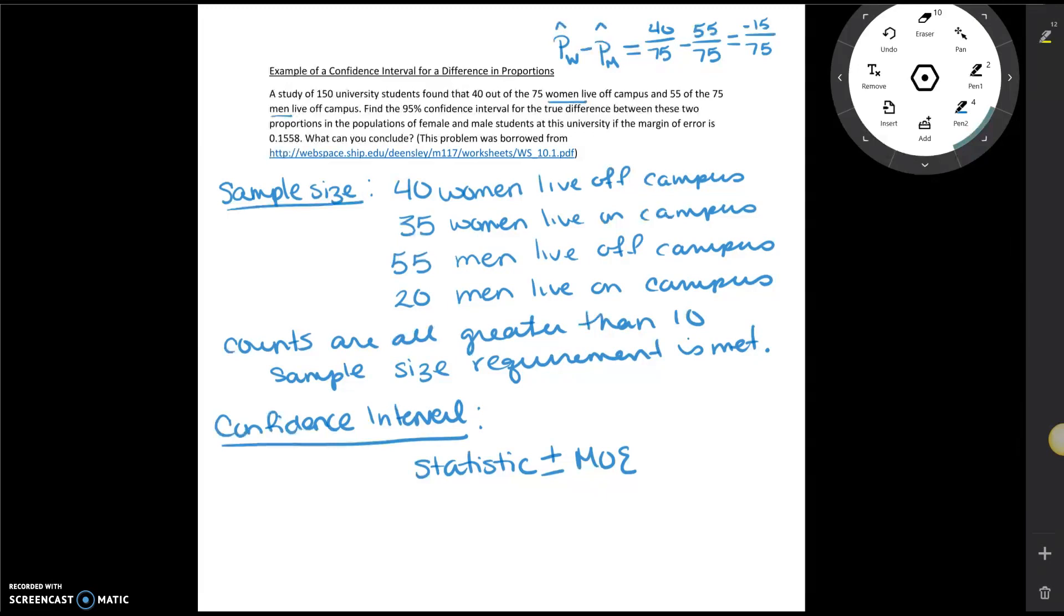We were looking at our statistic plus or minus our margin of error. And we already identified our statistic up here as negative 15 divided by 75. So if we take negative 15 divided by 75 we're going to find that is equal to negative 0.2, plus or minus our margin of error which is 0.1558.